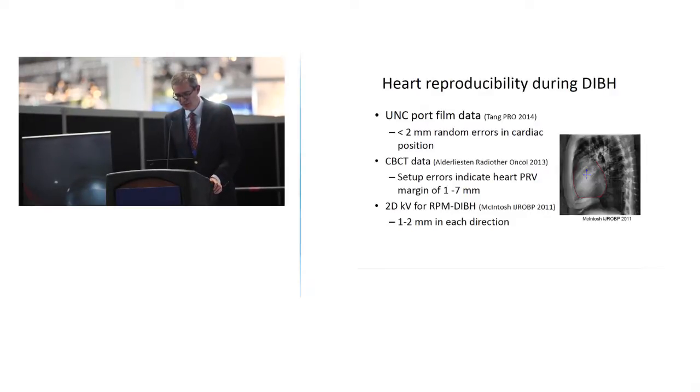We often do this for the targets but don't always think about it for organs at risk, and maybe that's a consideration given the variability that they see in the Cone Beam. There was this study published in 2011 that looked at 2D images and looked at the variation of the heart in the 2D projections and saw about 1 to 2 millimeters variation. So I think it's important to have these considerations in mind when you're designing your treatment plans.